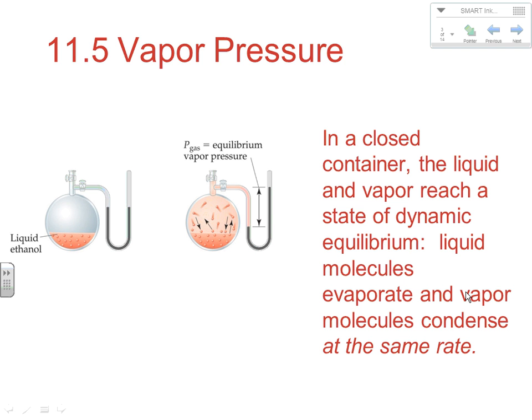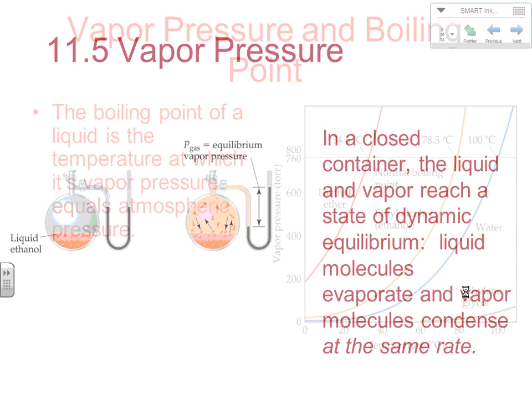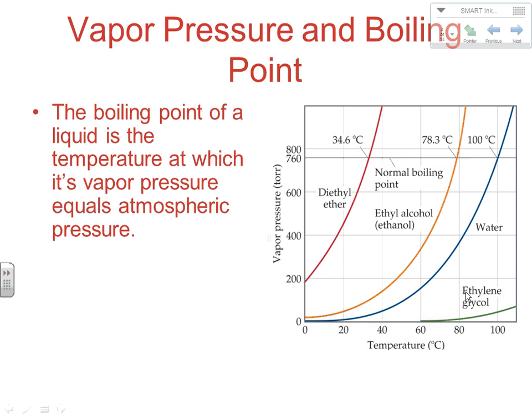In terms of dynamic equilibrium, what's equal — and you may remember this from pre-AP chemistry — is that the opposite rates are equal: the rate of evaporation equals the rate of condensation. We end up with a constant pressure situation. The boiling point of a liquid is the temperature at which its vapor pressure reaches atmospheric pressure, because boiling is actually occurring when the vapor pressure equals the atmospheric pressure pushing down.